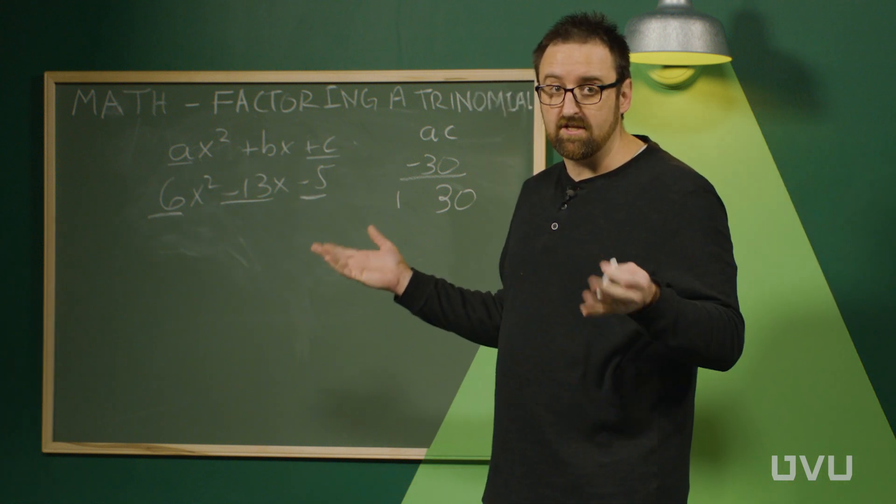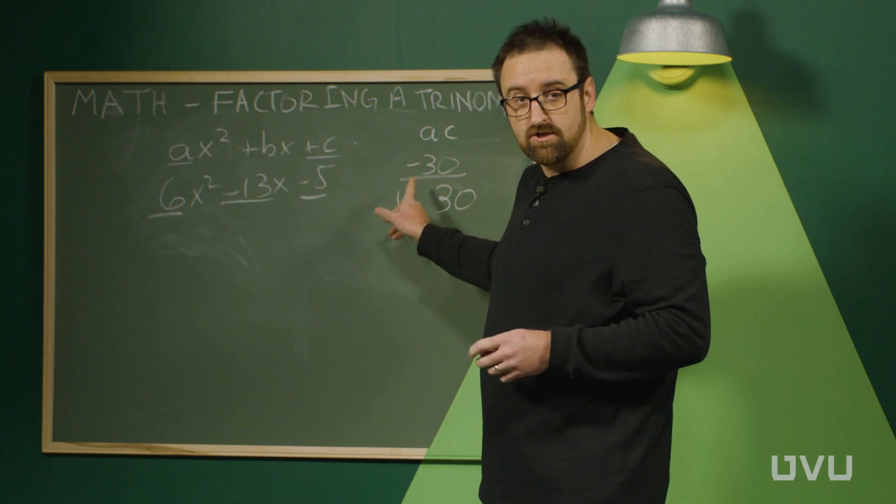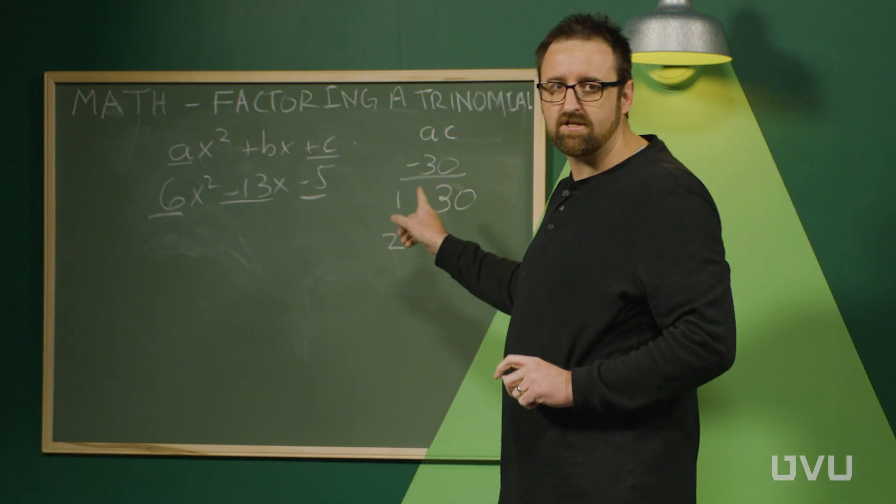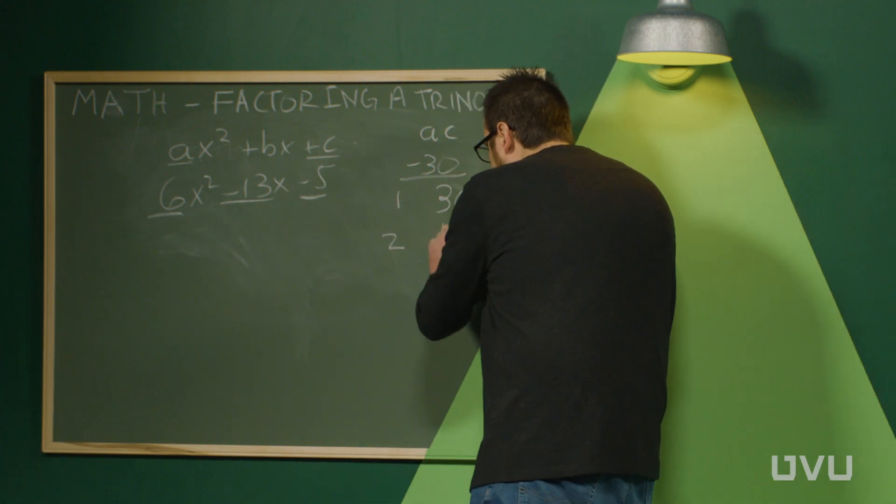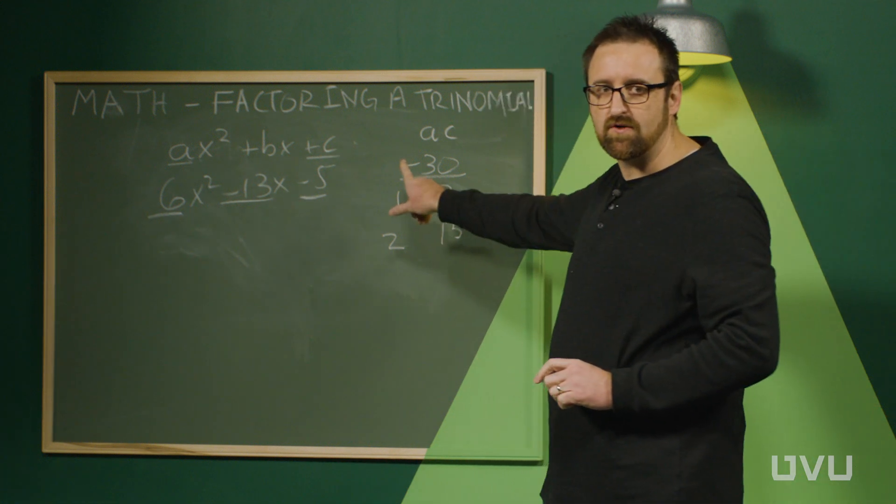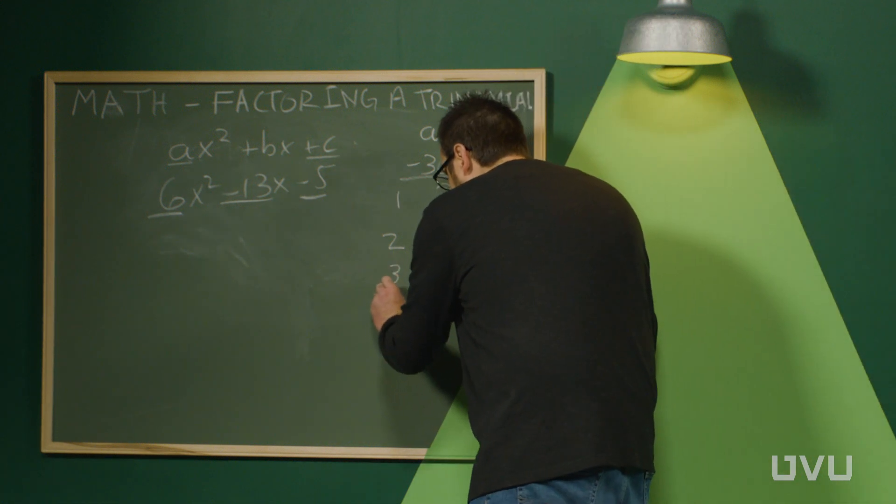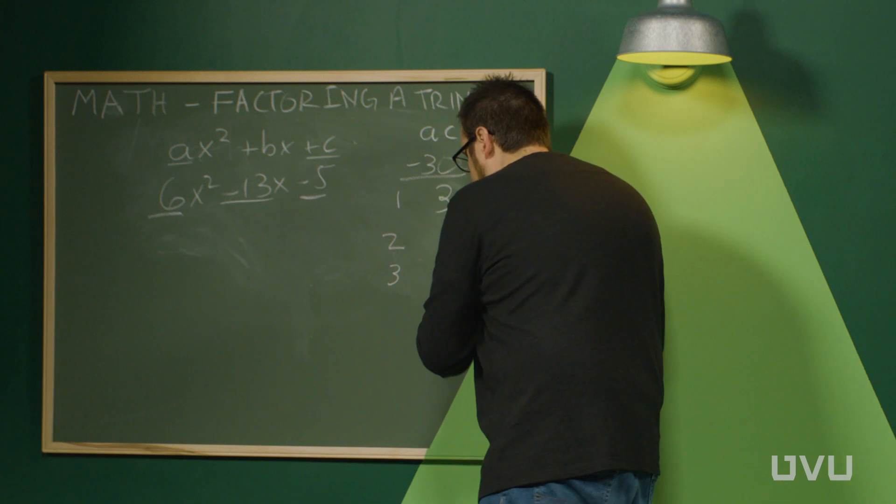Then we take a look at the number 2. 2 is also a factor of this. So we'll put a 2 there and the factor pair it has is 15 because 2 times 15 is 30. Keep going. We go to 3 next. It's also a factor. So we put 3 and its factor pair 10.